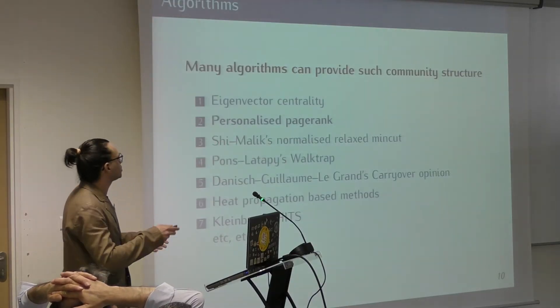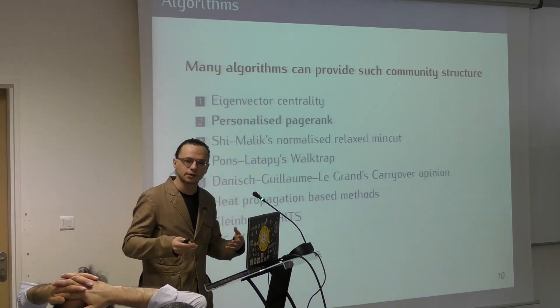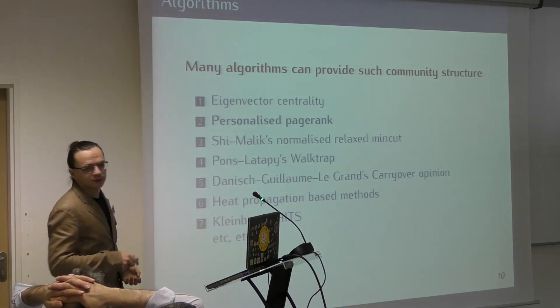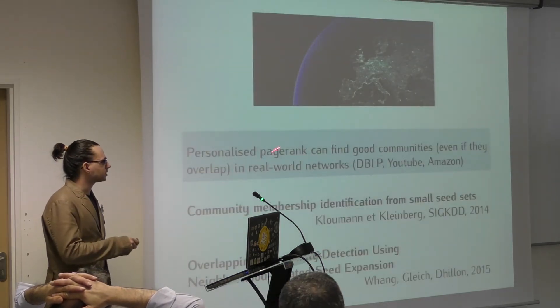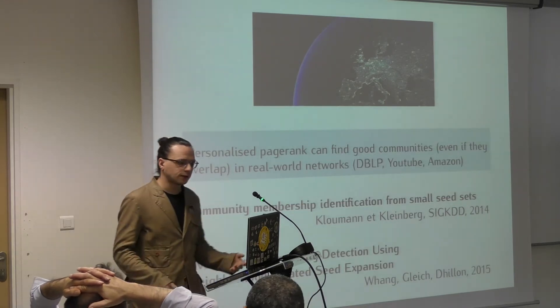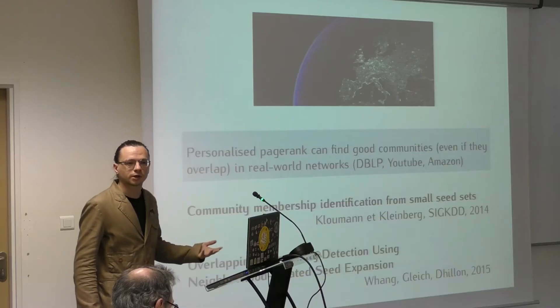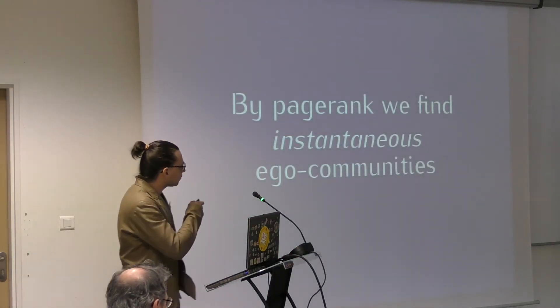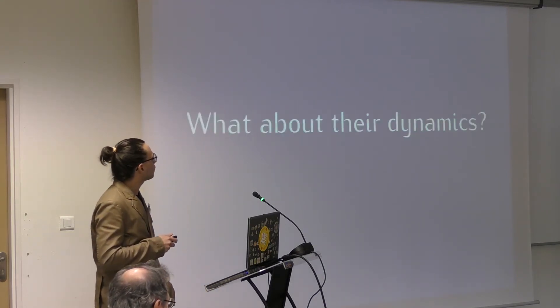We will focus on the personalized page rank. Why? Because it has been proved in the literature that the personalized page rank can find the good communities in real world networks. So we use this algorithm in particular. But our method can be applied to other algorithms. By page rank we find instantaneous communities. How we can visualize the dynamics? First of all, we need to think about our model of dynamic graph.